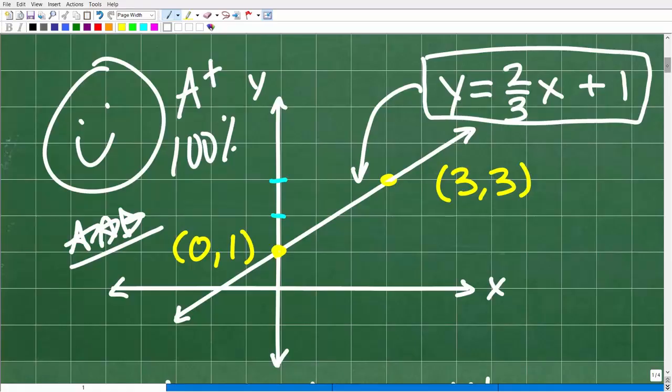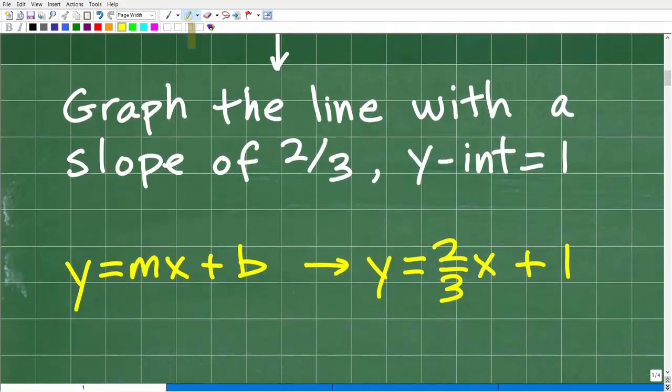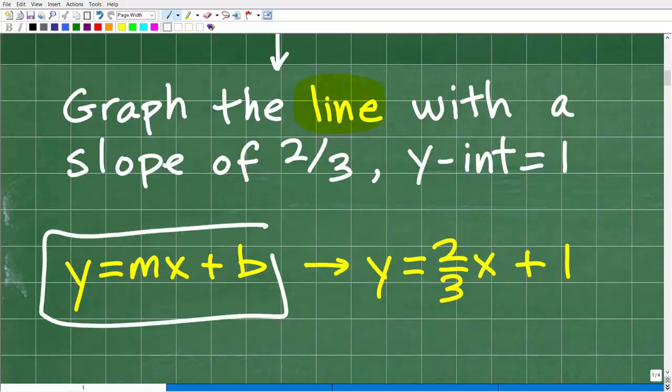So let's go ahead and get into the actual solution here. So what we're going to do is graph the line. Now, when you see the word line in algebra, it's basically synonymous with linear equation. So in algebra, probably the number one way to graph lines, graph linear equations is using the slope intercept form. That is y equals mx plus b. So hopefully you're familiar with this form of a line or this form of a linear equation.